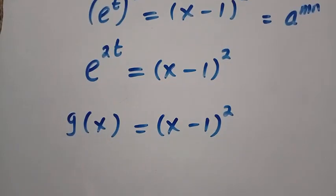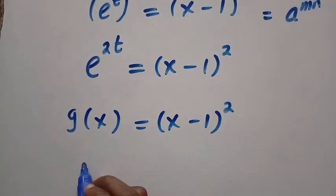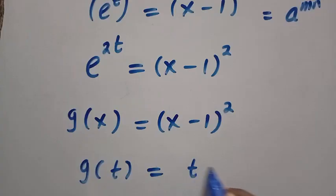Therefore, we change our x to t. Then, g of t equals (t minus 1) raised to the power of 2.